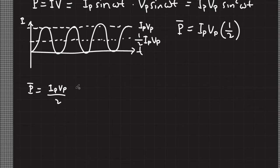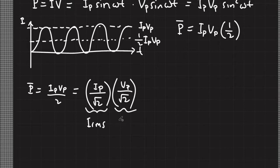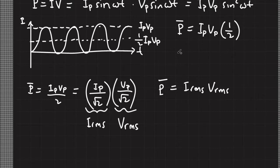So let me rewrite the average power as I sub P times V sub P over 2. I can distribute the denominator 2 for peak current and peak voltage, rewriting this as (I sub P over √2) times (V sub P over √2). Each term can be considered an average value for current and voltage. The term I sub P over √2 is called the root mean squared current, and V sub P over √2 is called the root mean squared voltage. So power is actually equal to the root mean squared current times the root mean squared voltage.